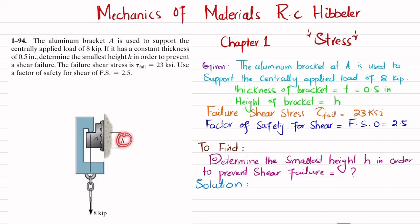Let's start with the solution. If you take the frontal view of this bracket A, you will find it like this, this will be the rectangular one. This will be the thickness which will be 0.5 inch and this will be the height h. So we are going to find this height h.